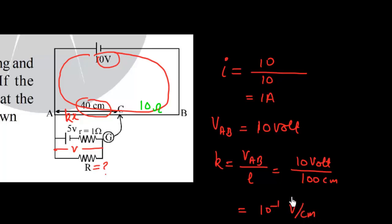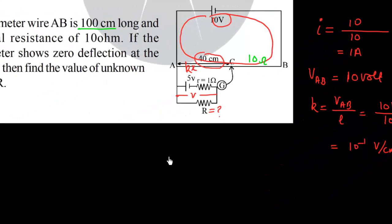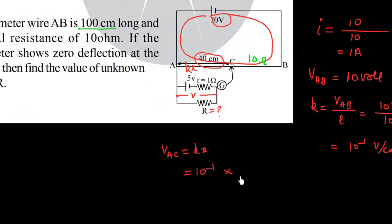So this is the value of K. Now VAC equals K times X. K is 10 to the power minus 1 and X is 40 centimeters. So VAC equals 4 volt.